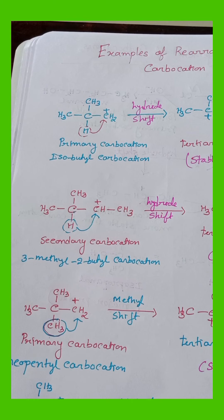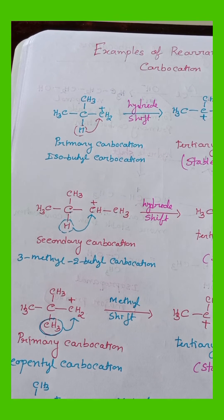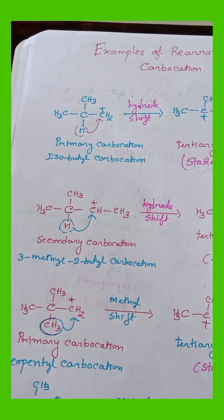So, these are examples of rearrangement of carbocation to get a stable carbocation from a less stable carbocation.